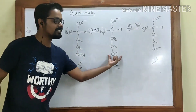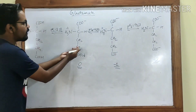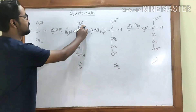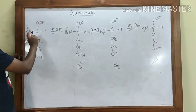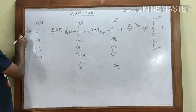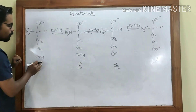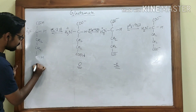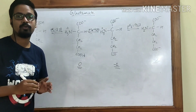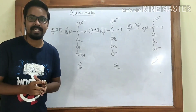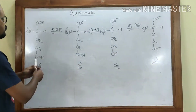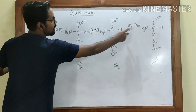A net charge of zero is not what happens at physiological pH — at normal body pH glutamate stays in the minus-one form. If I decrease the pH even further, the carboxyl groups accept more protons: the side-chain COOH and backbone COOH are both protonated, leaving only one positive charge (NH3+), so the net charge becomes plus one. So we now have the full charge series: plus one, zero, minus one, minus two.